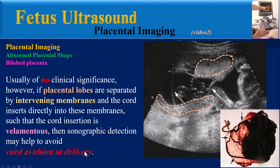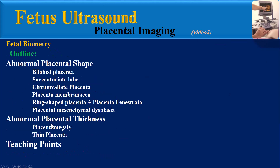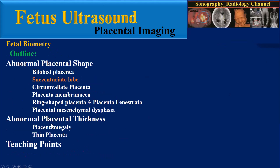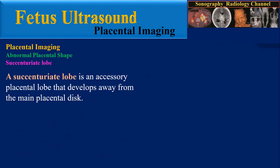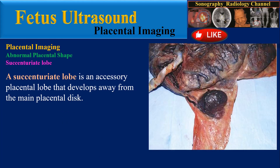However, if the placental lobes are separated by intervening membranes and the cord inserts directly into these membranes such that the cord insertion is filamentous, then sonographic detection may help to avoid cord avulsion at delivery.